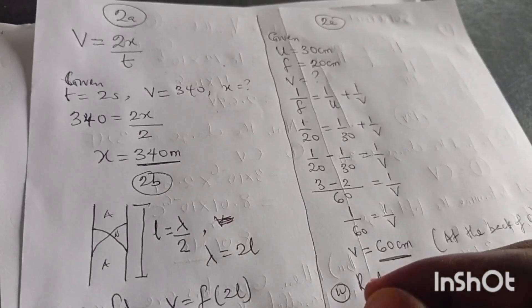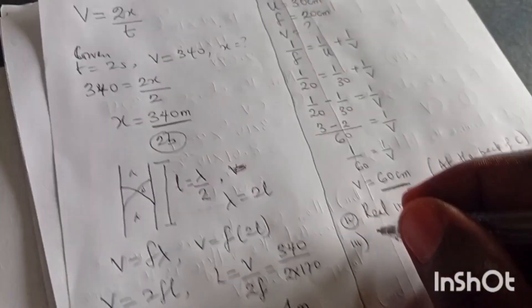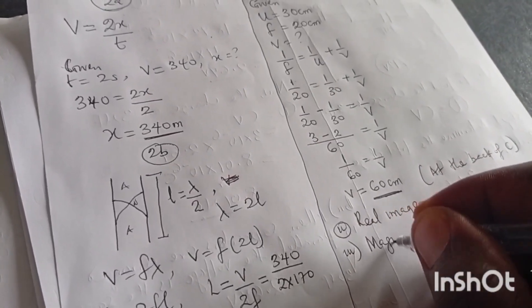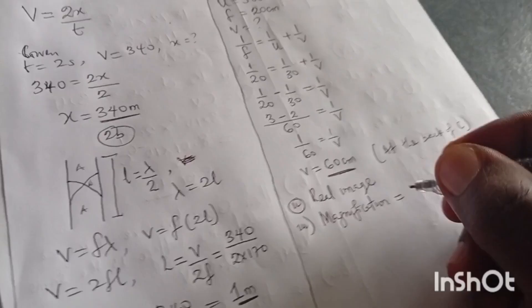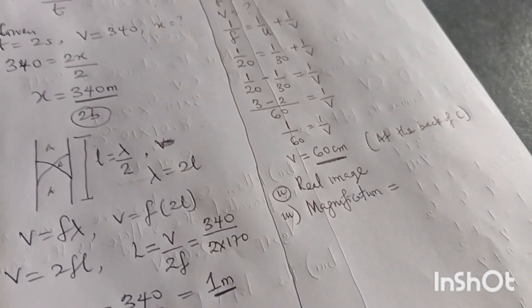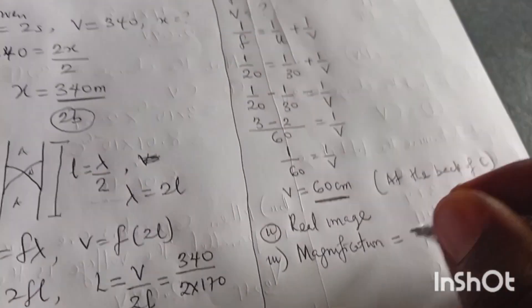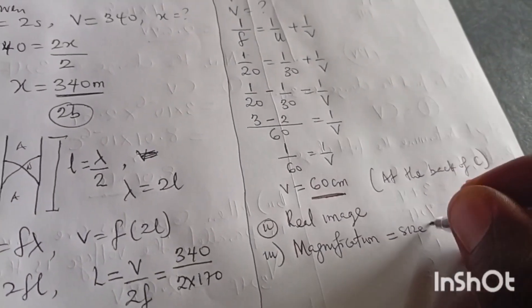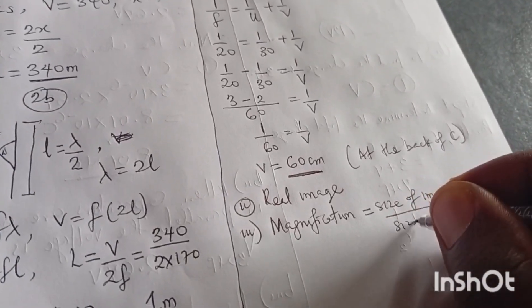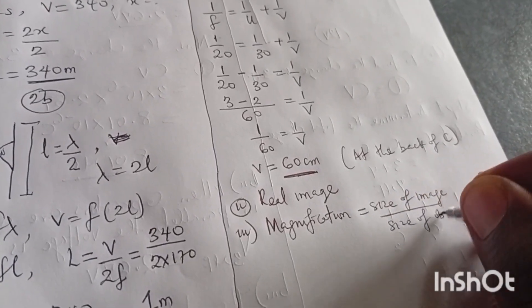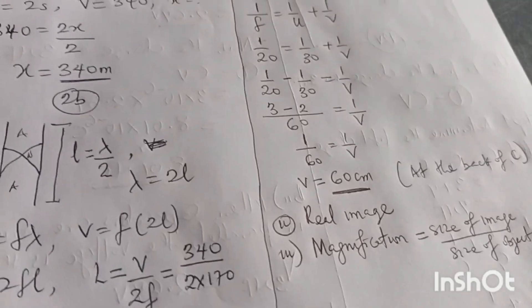Now moving forward, I think we have answered that one. They state, is the image really virtual? You can see the image is formed at the front of the mirror. So the image is real image, real image. And lastly they said find the magnification. When you talk about magnification, anywhere in the world, magnification is talking about size of image over size of object. Also applicable in biology, the size of image over the size of object.